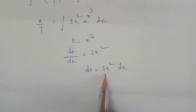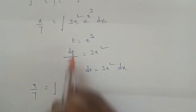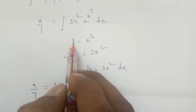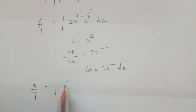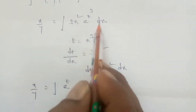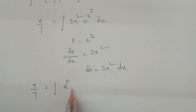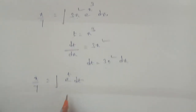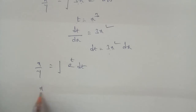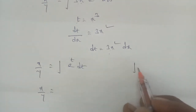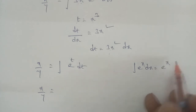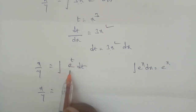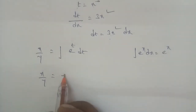Applying the substitution: x by y equals the integral of e to the power t dt, since x cubed becomes t and 3x squared dx becomes dt. Using the formula that the integration of e to the power x dx equals e to the power x, the integral of e to the power t dt equals e to the power t.